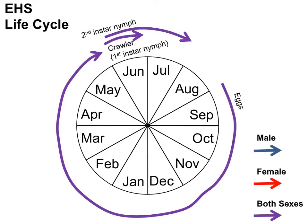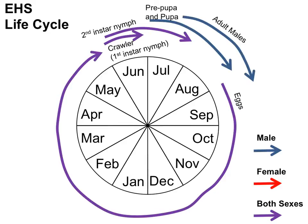Both males and females go through the crawler and first instar nymph stage, then they go through a second instar nymph stage. The males then go through two more stages: the prepupa and pupa stage. Adult males emerge out of a cocoon made by the pupa. Adult males have wings but are not good flyers. Males do not feed as a prepupa, a pupa, or an adult. They do feed as a first instar or second instar nymph.